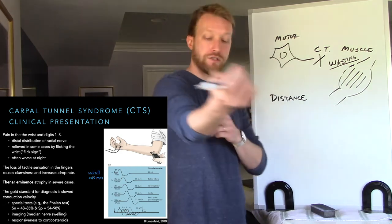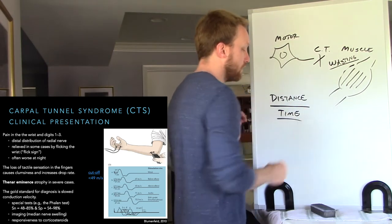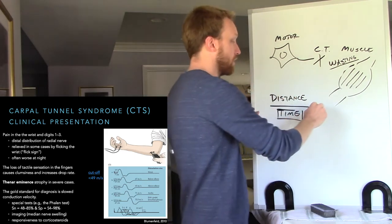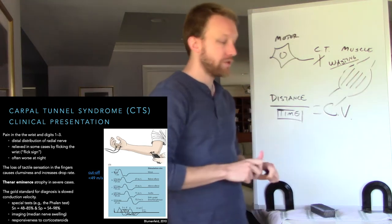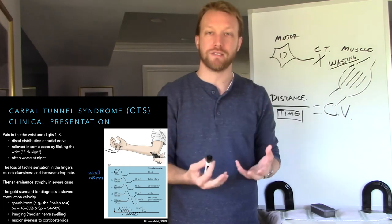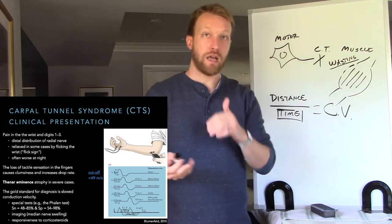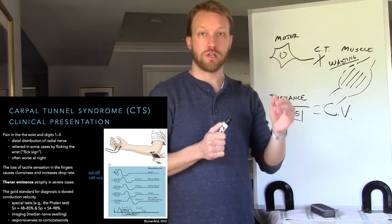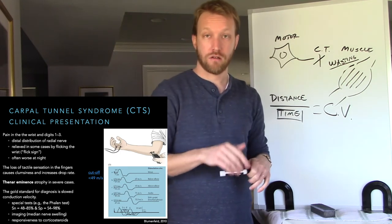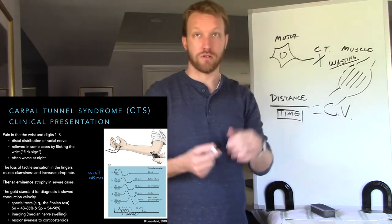By measuring how long it takes for stimulation of the nerve to cause muscle activity, and dividing distance by time, we get conduction velocity. Different nerves have different conduction velocities depending on their axon types. For motor responses these should be the fastest fibers — large and myelinated. When myelin is lost, conduction velocity slows. A conduction velocity dropping below roughly 70 meters per second, and especially below 50 meters per second, is the general cutoff for indicating slowed conduction in the median nerve.